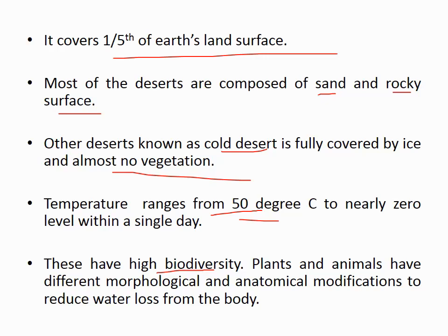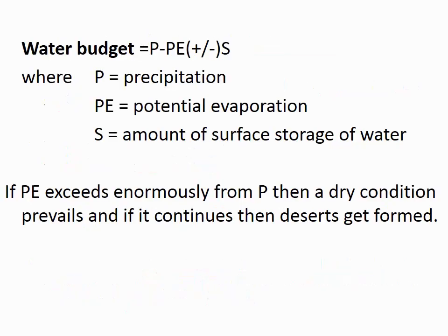Some animals found in the desert ecosystem are also endemic to it. An important feature is adaptation — animals belonging to the desert ecosystem have morphological or anatomical modifications to reduce their evaporation loss, because the desert has very little precipitation and a great scarcity of water. In this hostile condition, they must adapt according to the environment.